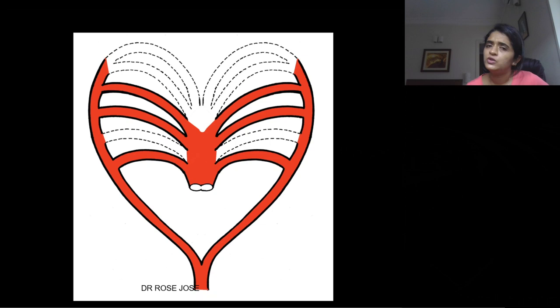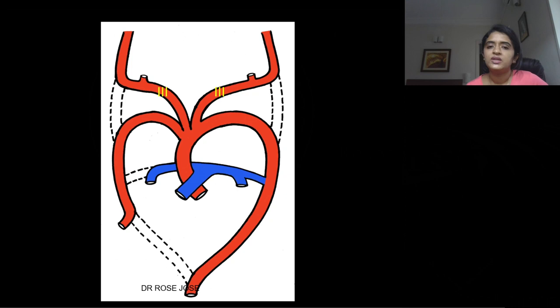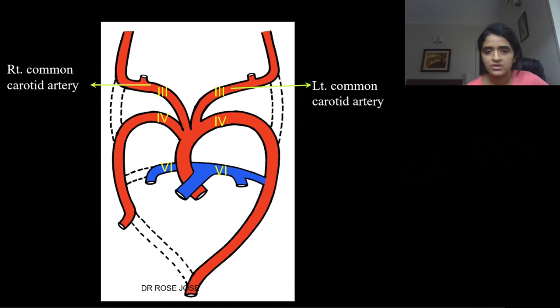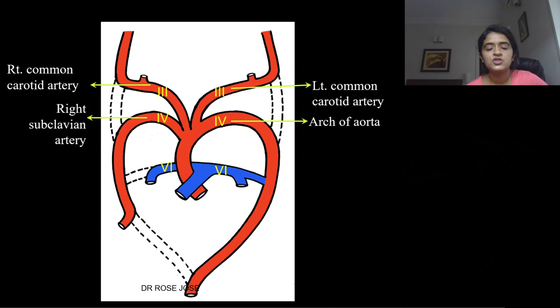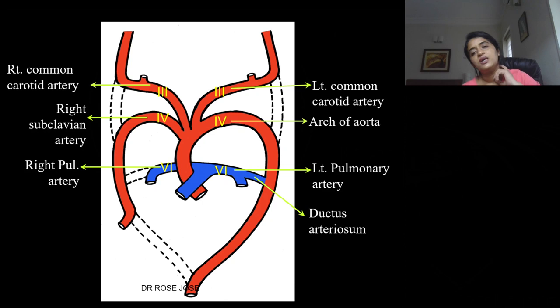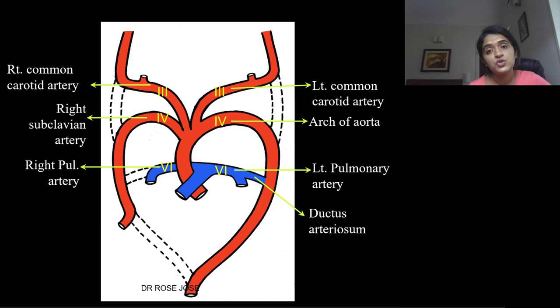There are mainly six aortic arches, of which arches 3, 4, and 6 are the most important. The third arch gives rise to the common carotid arteries. The fourth arch on the left gives rise to the arch of aorta; on the right, the subclavian artery. The sixth arch on the left gives the left pulmonary artery; on the right, the right pulmonary artery, plus the ductus arteriosus connecting the pulmonary artery to the aorta.